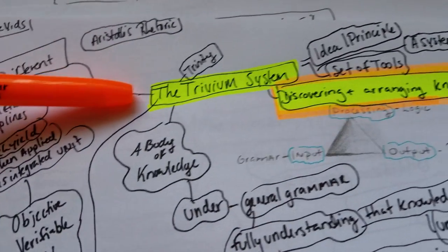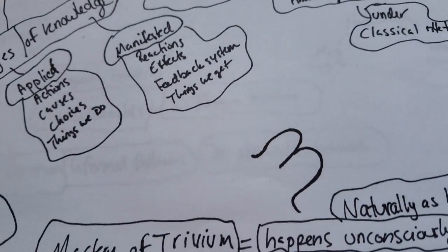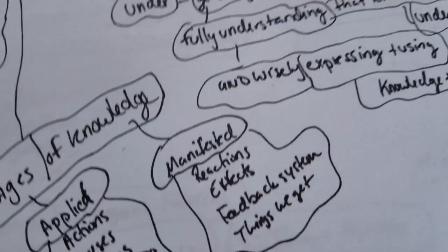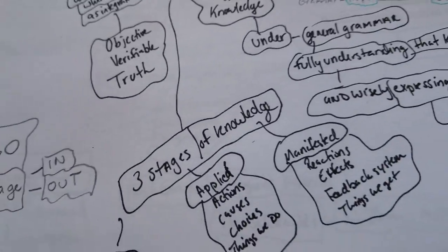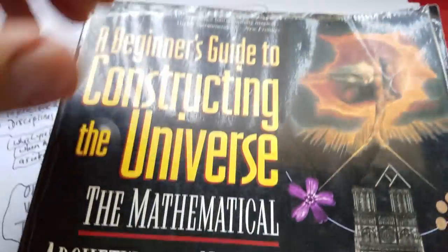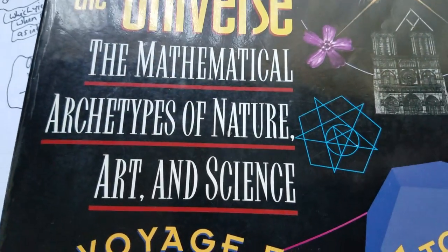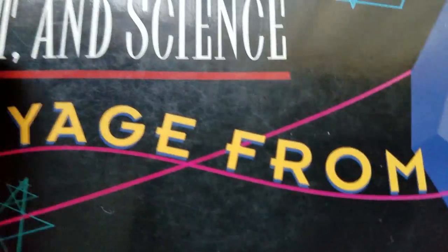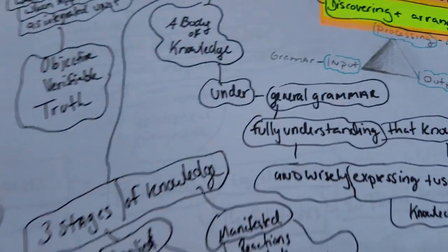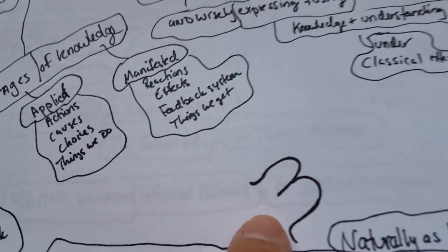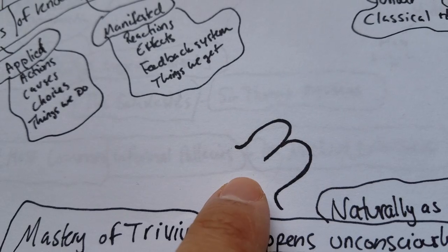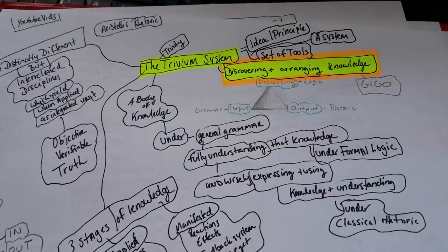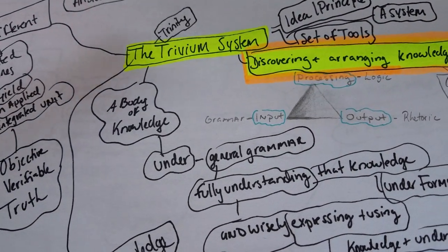So the trivium, as you can see, is based on the principle of three. And in another video, we talked about the basic core mental models, the universal principles. And I covered this book here, A Beginner's Guide to Constructing the Universe, the Mathematical Archetypes of Nature, Art and Science, A Voyage from 1 to 10 by Michael Schneider. This is an excellent book to get for the mental models because it will tell you a lot about the number three, the archetypal, symbolic meaning of three in principle.